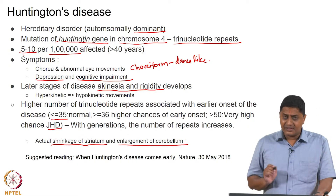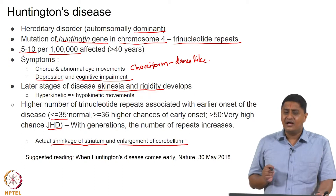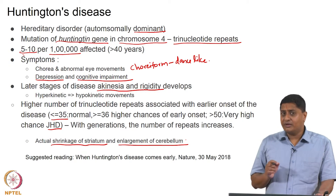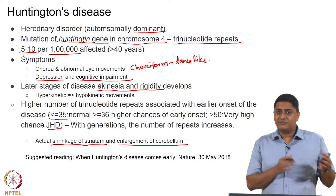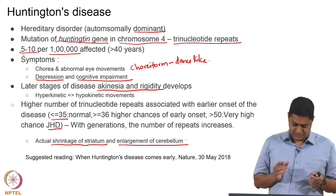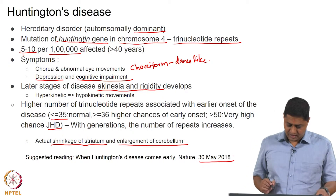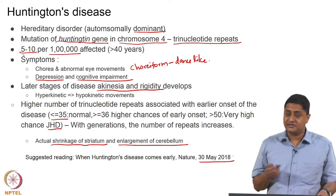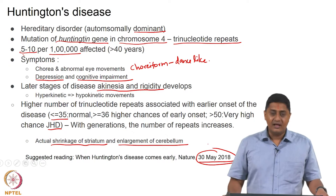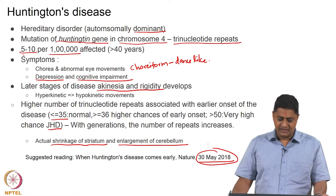Although the specific gene, chromosome, and particular molecular details have been identified, a lot of research is still needed to further understand this. In comparison with Parkinson's disease, Huntington's disease and its pathophysiology are relatively poorly understood. Please do read the most recent article on this topic in Nature — 'When Huntington's disease comes early' — published 30th May, along with a few accompanying articles.